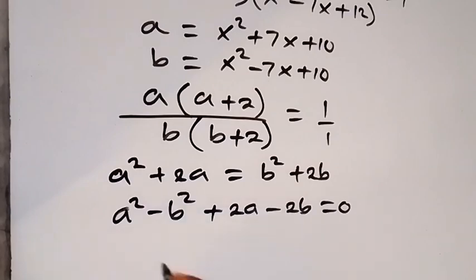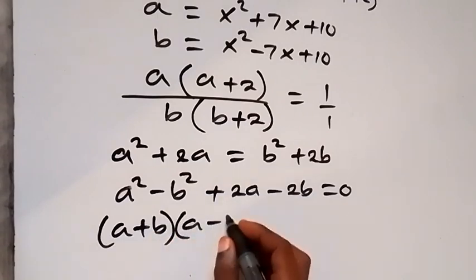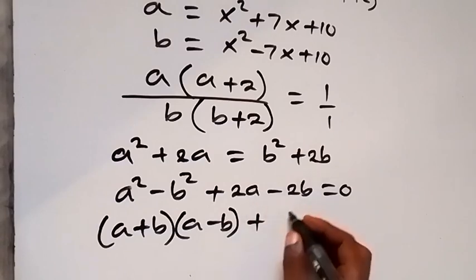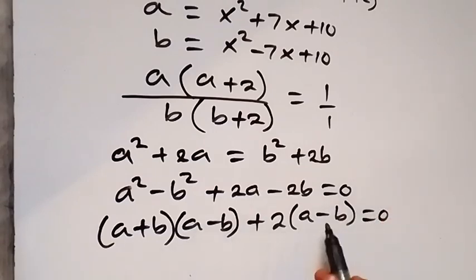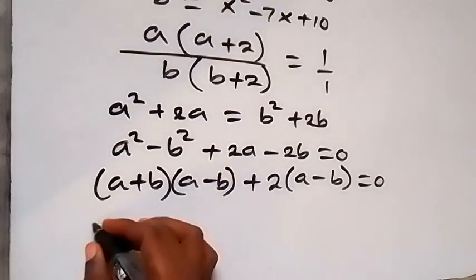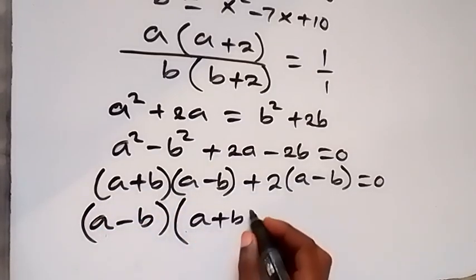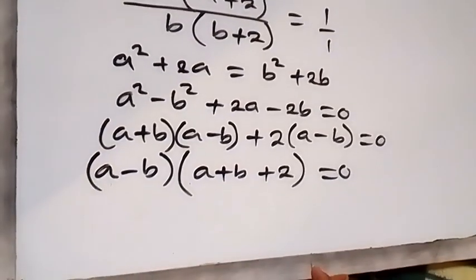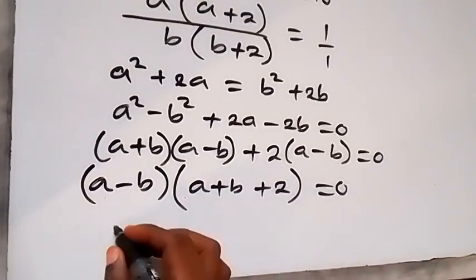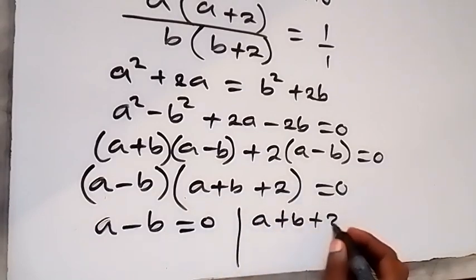We recognize a difference of two squares: a² − b² = (a+b)(a−b). Factoring 2 from the remaining terms gives 2(a−b). Taking (a−b) as common factor: (a−b)(a+b+2) = 0. This gives two cases: a−b = 0, or a+b+2 = 0.